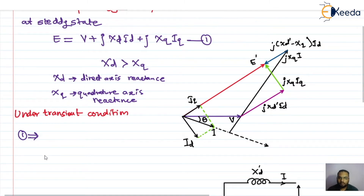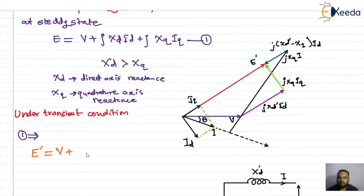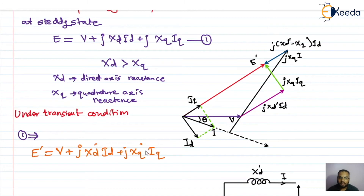Under transient condition, equation one becomes modified: E is replaced with E', which is the induced EMF during transient. It is equal to V + j·Xd'·Id + j·Xq'·Iq. The dash notation indicates transient values — Xd' is the direct axis transient reactance and Xq' is the quadrature axis transient reactance.